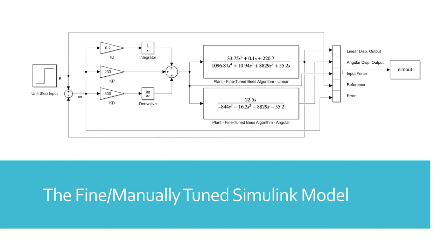The fine-slash-manually-tuned Simulink model utilizes a proportional gain, kp, of 233, an integral gain, ki, of 0.2, and a derivative gain, kd, of 500.